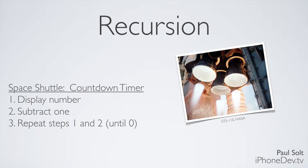Let's look at a basic example. We're going to implement a simple countdown timer. We're going to display a number, then subtract 1, and repeat those steps until we get to 0. We don't want a negative number — just count down from 5, 4, 3, 2, 1, 0, and then we're done.